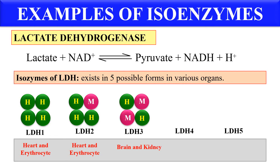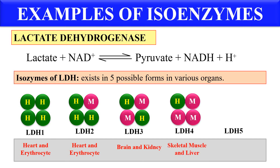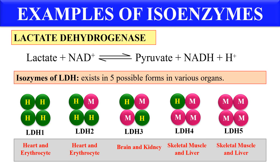LDH3 has the configuration H2M2, with 2 H molecules and 2 M molecules, and it is present in the brain and kidney. LDH4 has the configuration HM3 and is present in skeletal muscle and liver. LDH5 has the configuration M4 — it does not have any H molecule, only the M monomer — and it is present in skeletal muscle and liver.